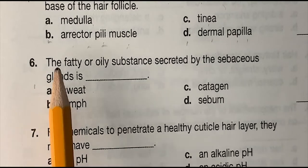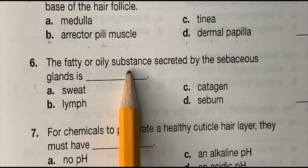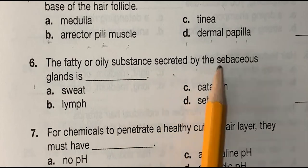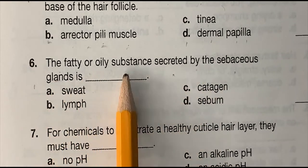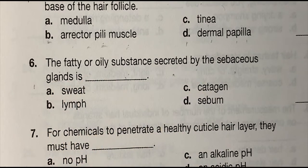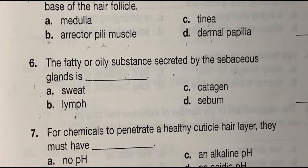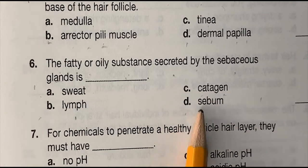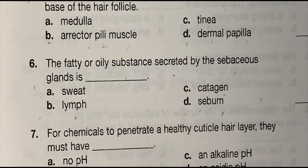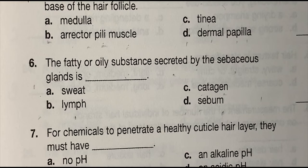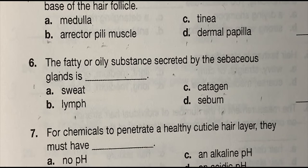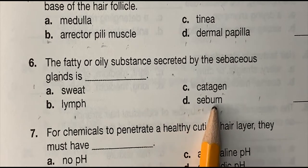Number six: the fatty or oily substance secreted by the sebaceous glands is the blank — (a) sweat, (b) lymph, (c) catagen, or (d) sebum. The correct answer is (d) sebum.